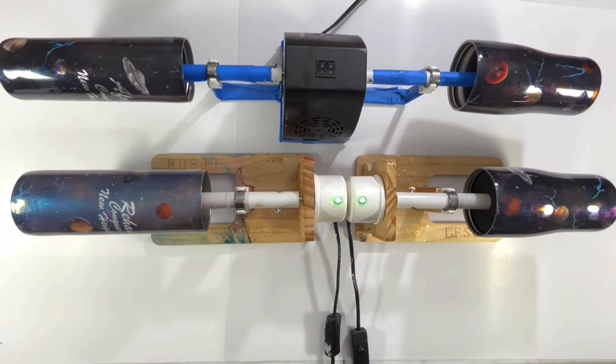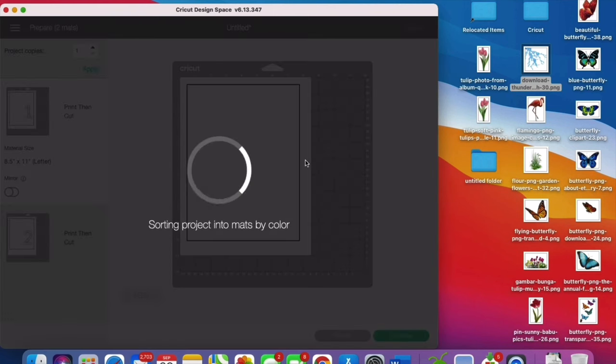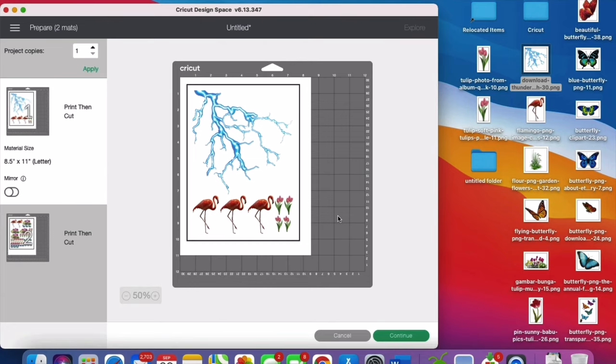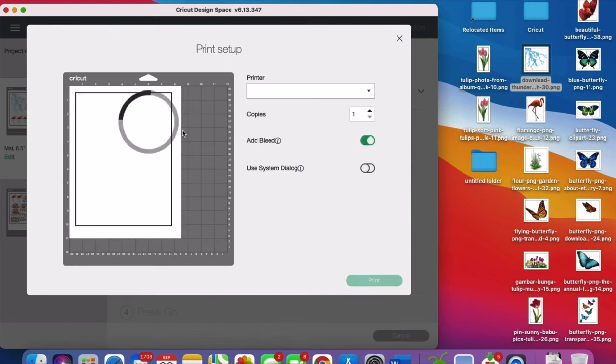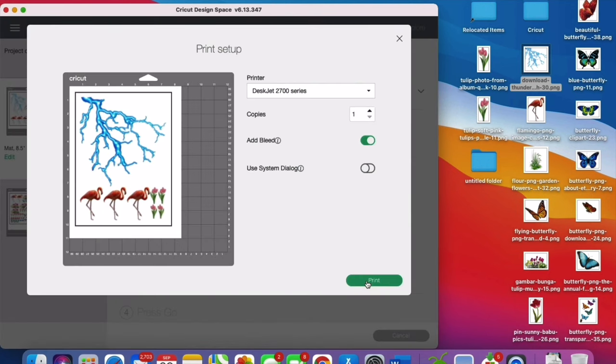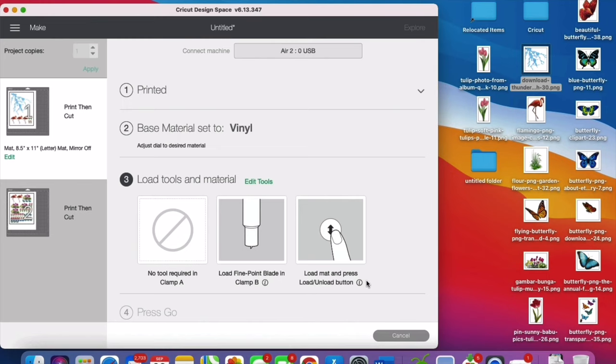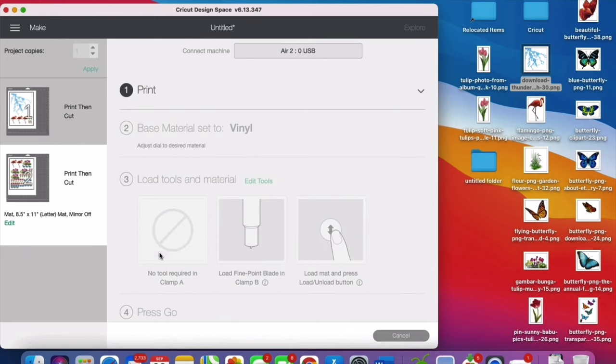Moving back to our flamingo project. Once all the images are ready, click make it on the top right. Then continue. It's gonna prompt you to this screen where you have to select the right machine on the top. And click this send to the printer icon. Select the right printer. I prefer to add bleed and select print. You gonna print and cut one image then the other one which is below here. The Cricut design space gonna select the layout for the paper automatically. We can't choose it.